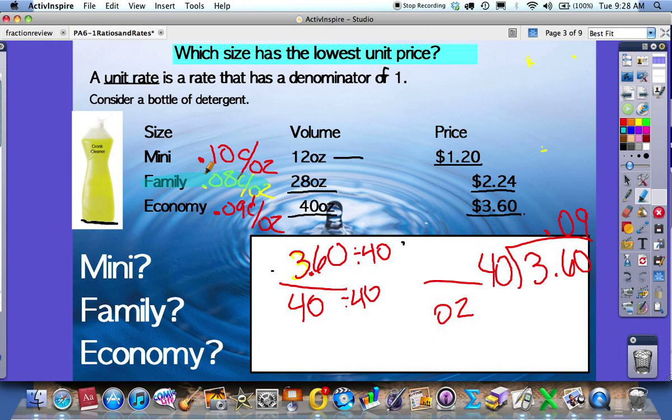All of these examples that we've done are finding unit rate. Unit rate means how much per one.